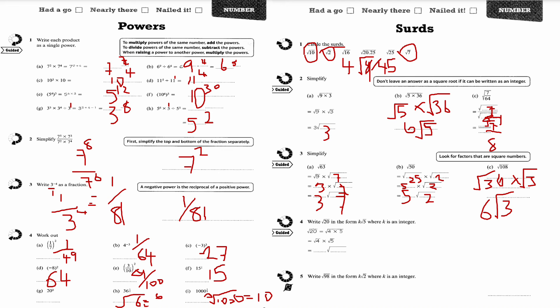This is question number 4. Root 20 in the form K root 5. Root 20 is root 4 times root 5. Root 4 is 2, so 2 root 5. This is a typical exam style question for the higher tier, so make sure that you are happy with these sorts of questions.